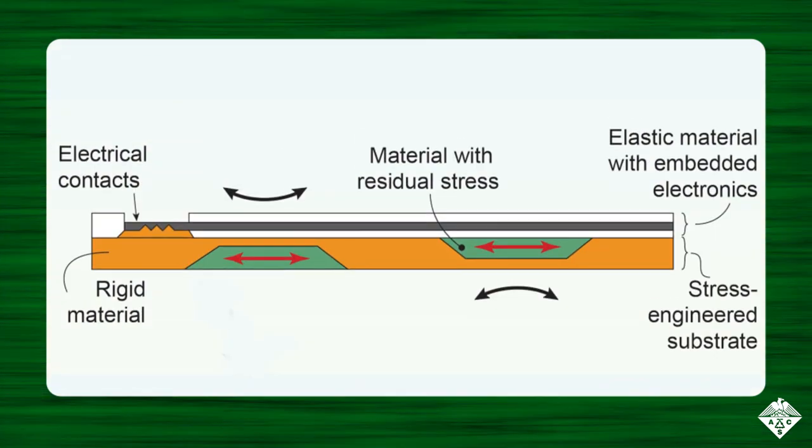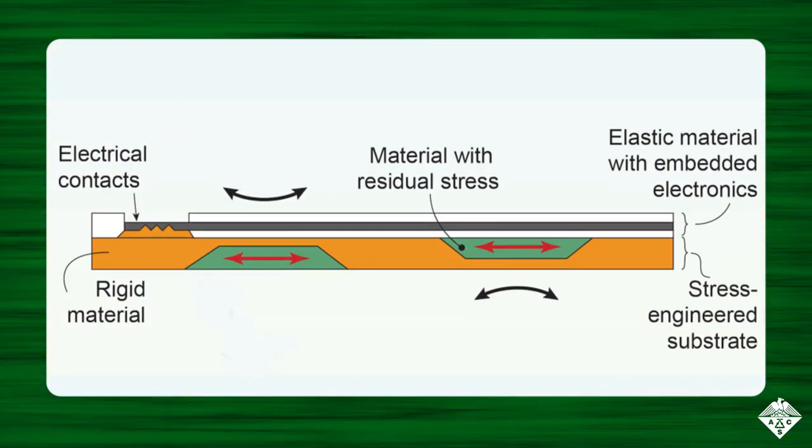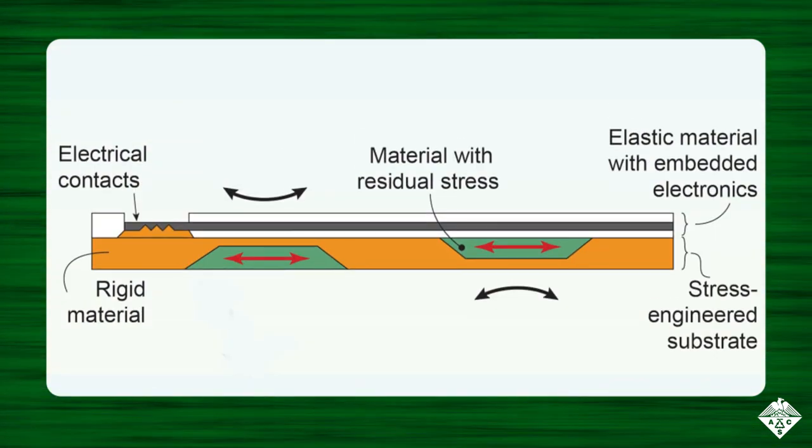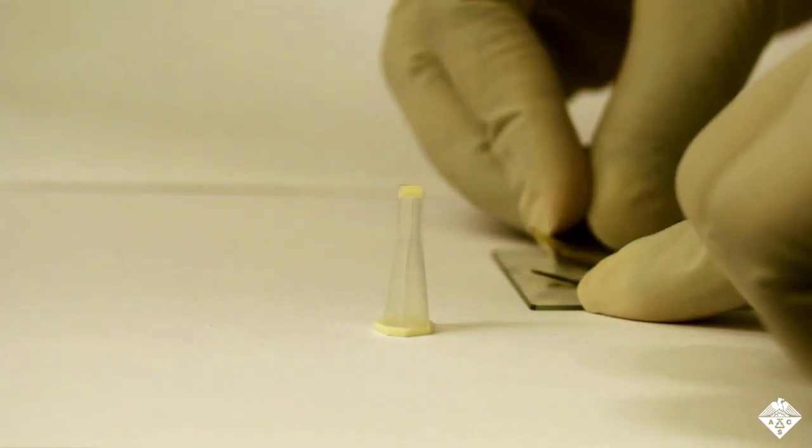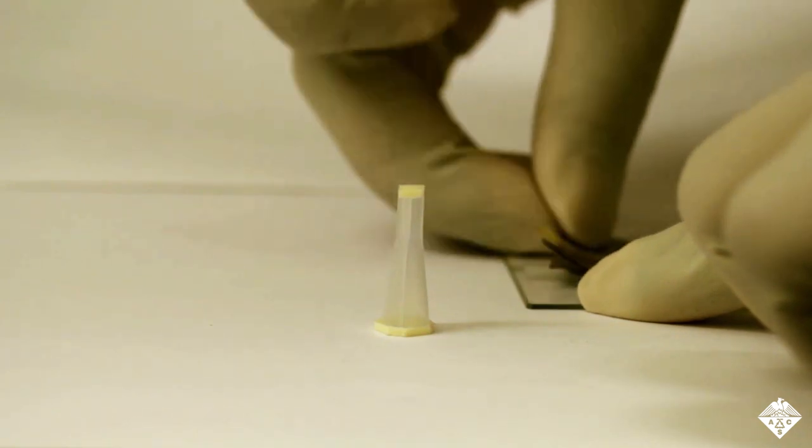Energy is stored in specific regions of the device in the form of residual stress during the printing process. After the flat device is printed and removed from the printer platform, swelling forces cause it to fold itself into its final shape without additional stimulus, such as light.